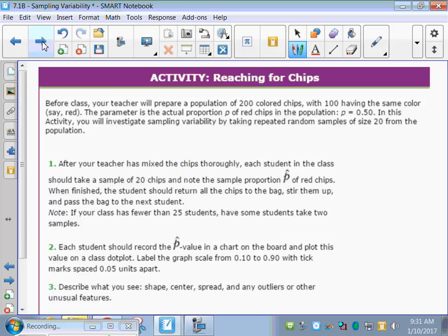Reaching for chips, we're just going to read through this activity. Before class, your teacher will prepare a population of 200 colored chips, with 100 having the same color, we'll say red. The parameter is the actual proportion P of red chips in the population. P is equal to 0.5. So half the chips in the bag are red. We're going to say the other half are blue. In this activity, you will investigate sampling variability by taking repeated random samples of size 20 from the bag.